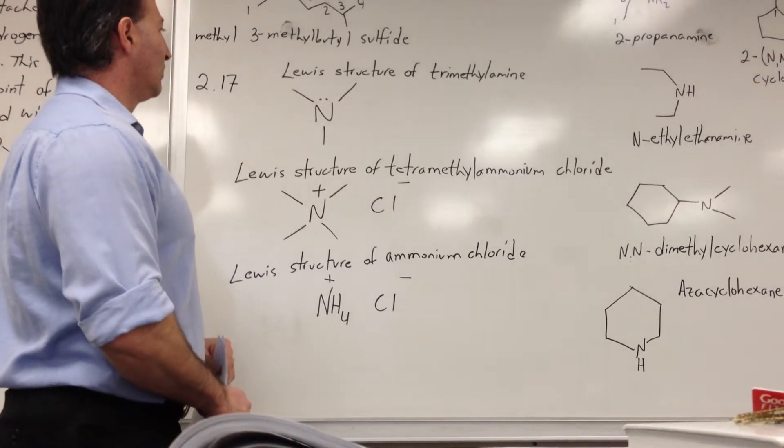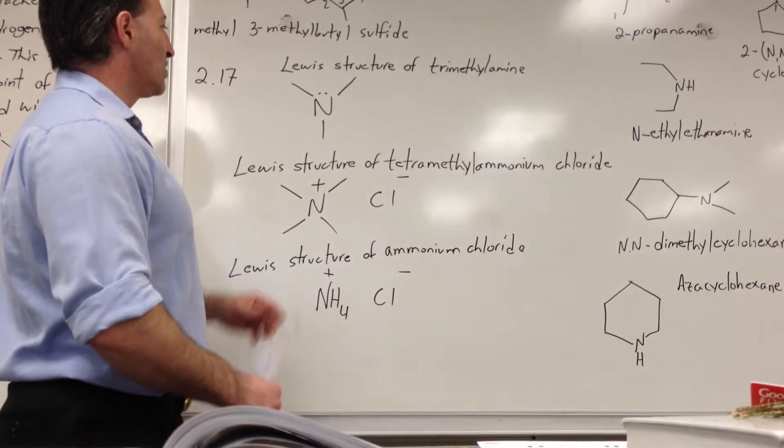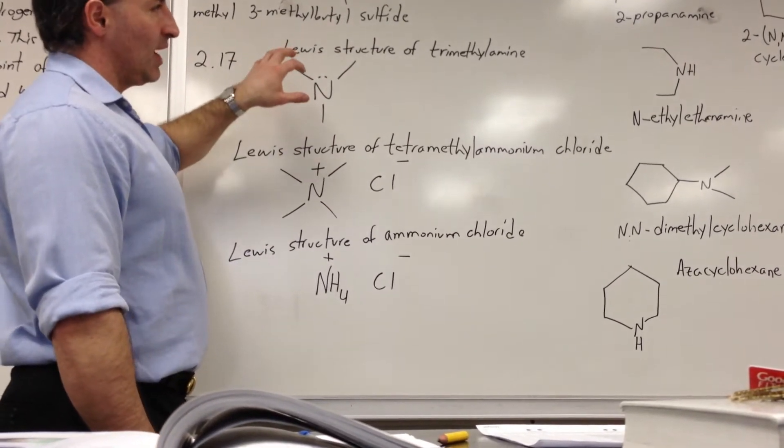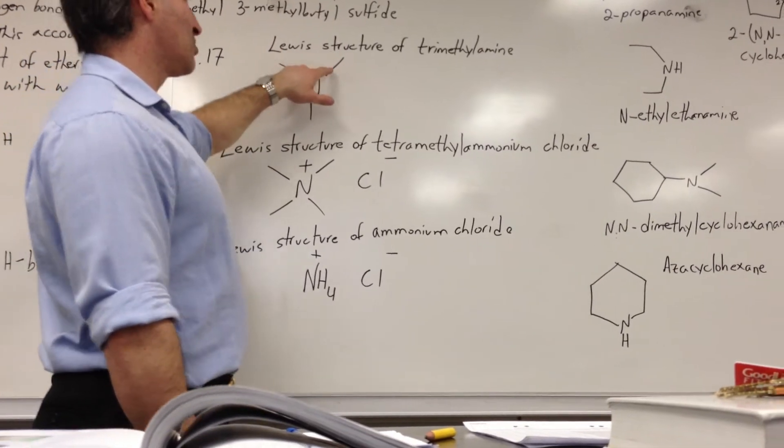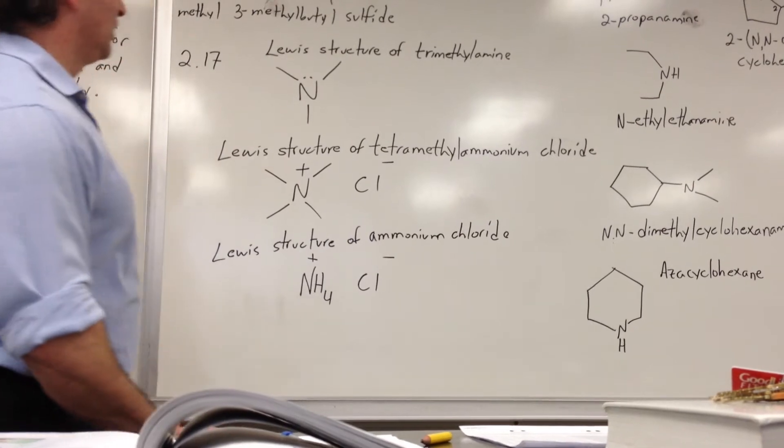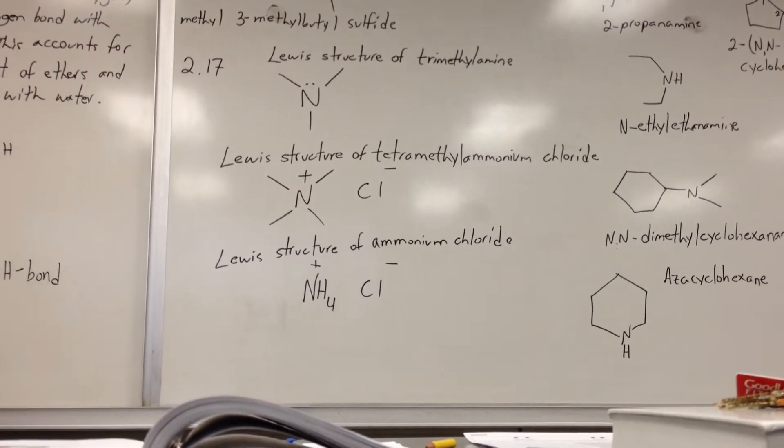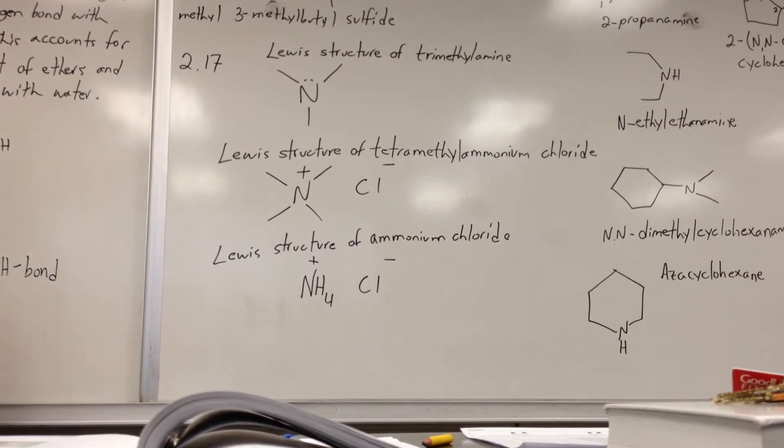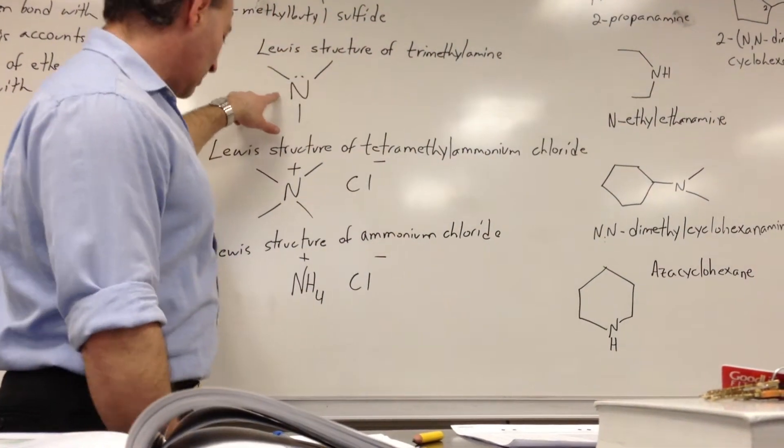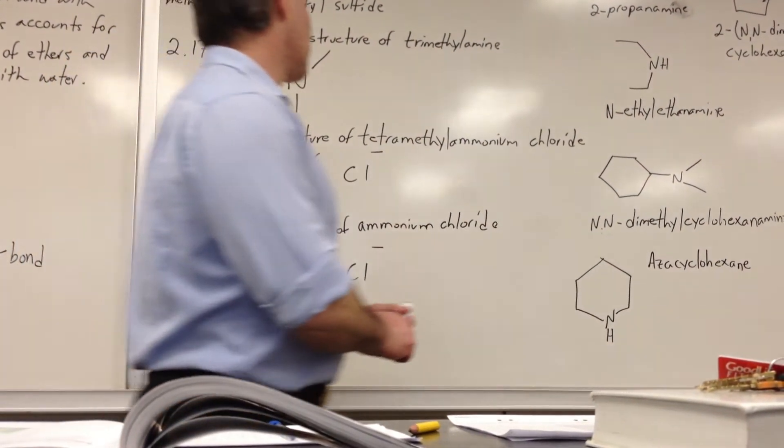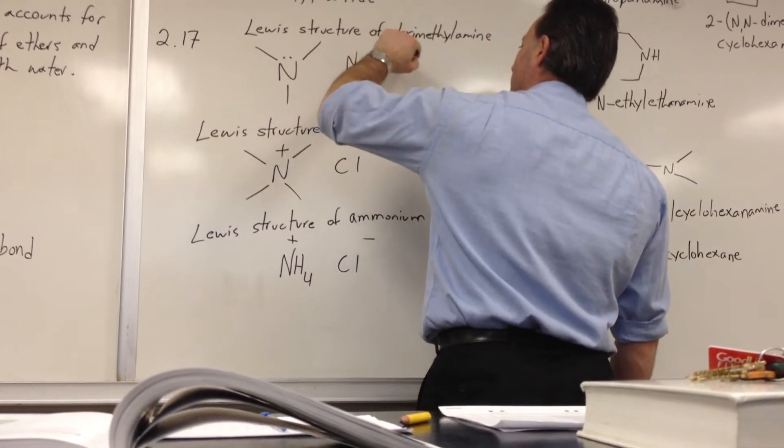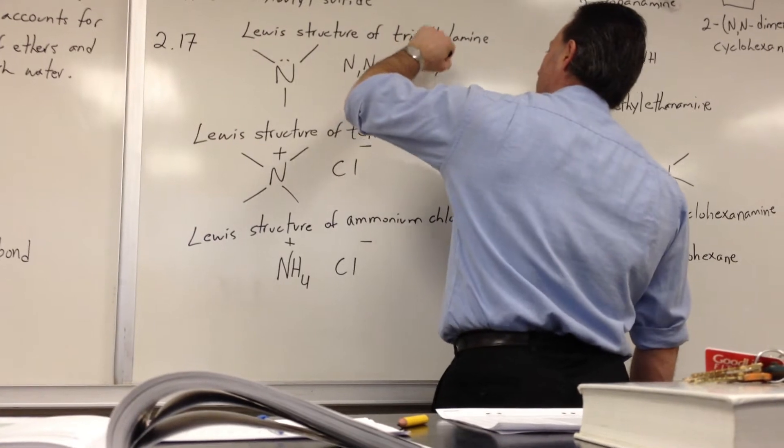For amines, you choose the longest continuous chain with the nitrogen atom on it. You name that as the skeleton. And then any other substituents attached to the nitrogen atom have to be named using N to show that it's attached to the nitrogen atom. So this is a trivial name, trimethylamine.